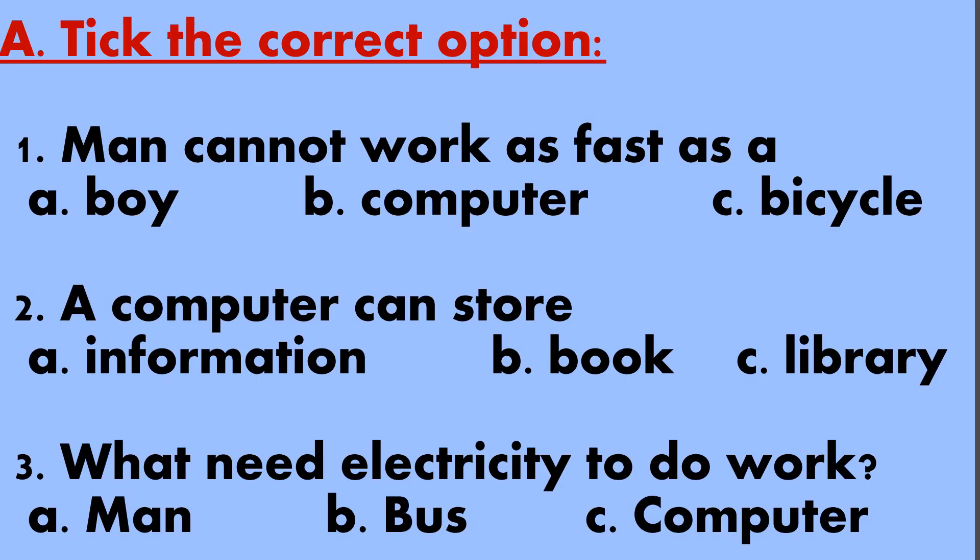Now, let's move on to exercises. First, let's begin with tick the correct option. Man cannot work as fast as a boy. Option b computer. Option c bicycle. And the right option is Option b computer.